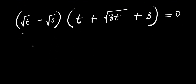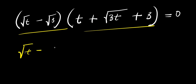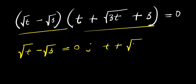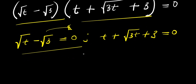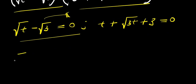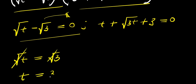From here I can set each factor to zero. For the first factor: root t minus root three equals zero, so root t equals root three, which gives us t equals three. That is our first solution, t₁ = 3.